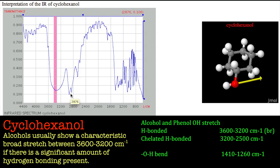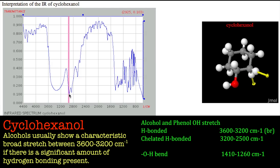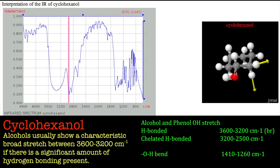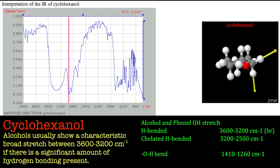Moving on, you can see this one's split into two — this is where the CH stretches are. At about 2925 wavenumbers, this is the symmetric stretch for the CH's. If you look at this carbon, you've got two hydrogens on for the CH₂ group — you can see it's a very pure CH stretch.